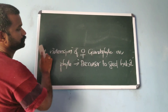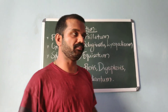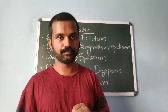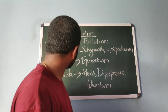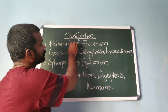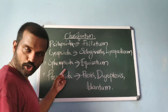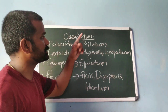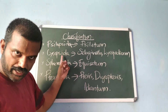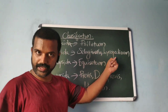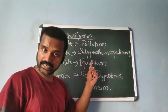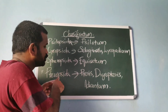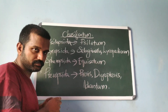Pteridophytes are grouped into four classes: Psilopsida, Lycopsida, Sphenopsida, and Pteropsida. Examples include Selaginella for Lycopsida and Equisetum for Sphenopsida. Pteropsida includes all ferns.